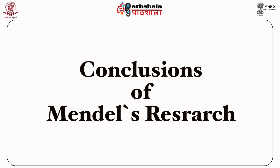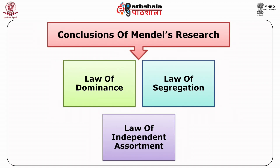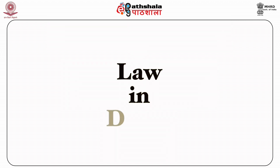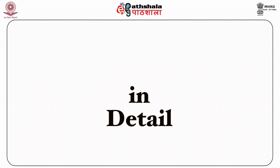Conclusion of Mendel's research. The three conclusions drawn from his research are: first, the law of dominance; second, the law of segregation; and third, the law of independent assortment. Now let us learn about these laws in detail.